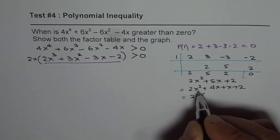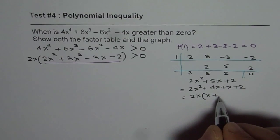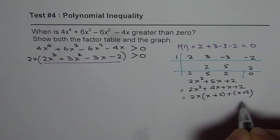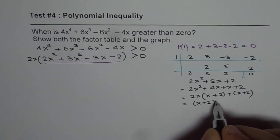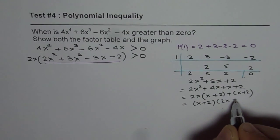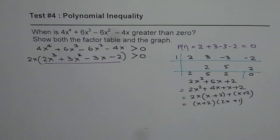And that gives us 2x is common, and we get x plus 2 plus x plus 2 and that is x plus 2 common and we get 2x plus 1. So that is also factored.